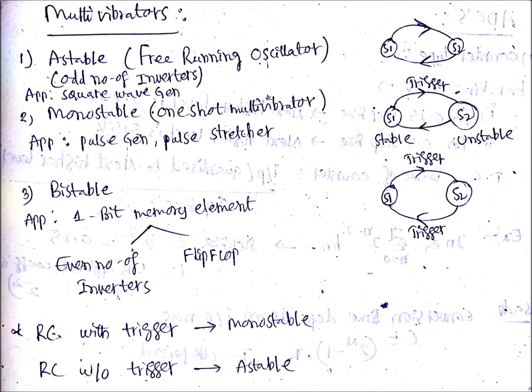Whenever you want to change a stable output, you need one trigger. After giving the trigger you will get an unstable state. From that unstable to stable you don't need any trigger - that is important. You need only one trigger pulse in case of monostable. The applications are pulse generator and pulse stretcher.